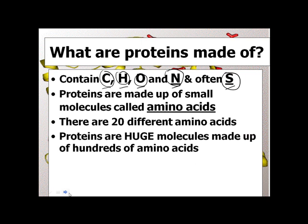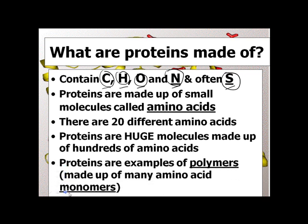Proteins are huge — way bigger than the others we've studied. Proteins are polymers, meaning they're made up of monomers, and those monomers in proteins are amino acids. Do you remember poly means many and mono means one? Proteins are polymers made up of amino acids, which are the monomers. Let's take a look at them.